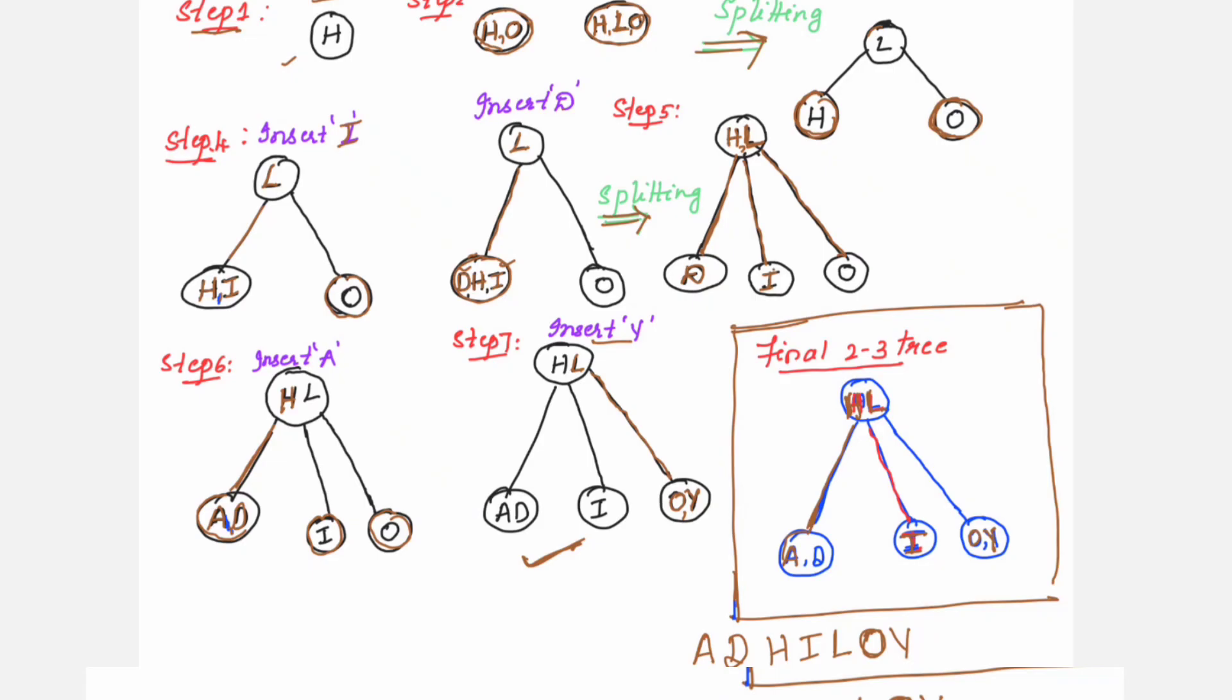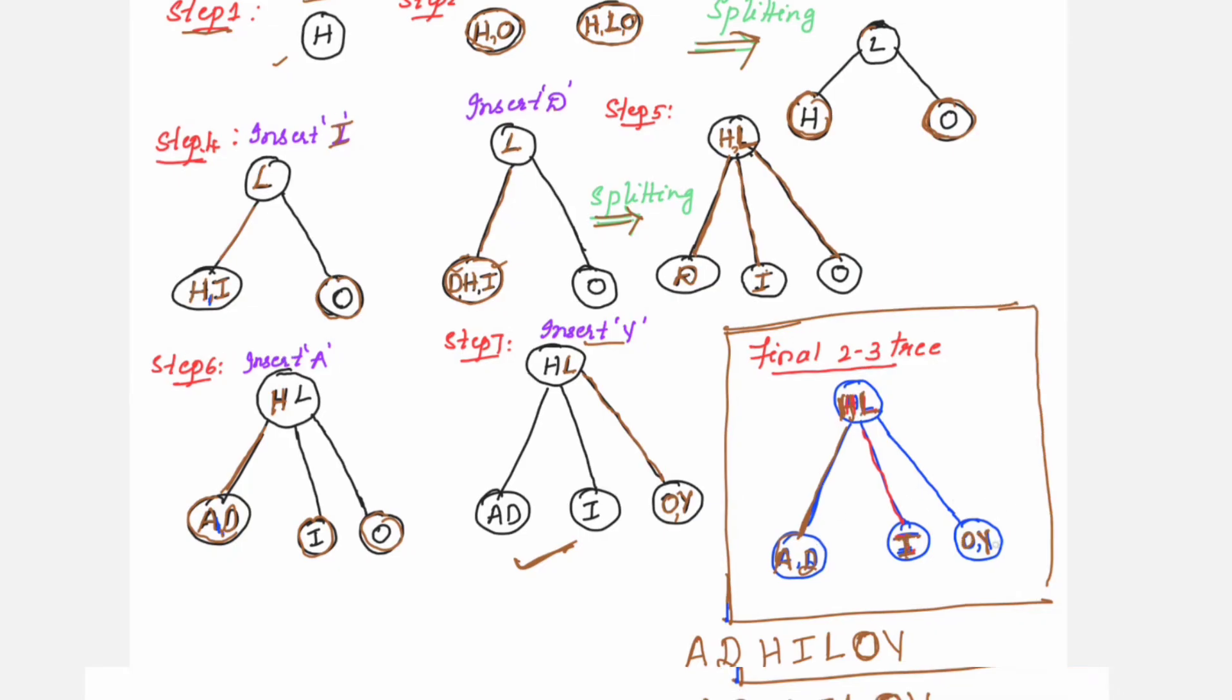Yes, all the letters which you have arranged in this 2-3 tree are as per the alphabetical order. As well, you have taken care that A and D are before the letter H, so it is appearing towards the left side. I lies in between H and L, it is appearing in the center. O and Y is after the letter L, so it is appearing towards the right side. That's it in this session. Hope you find it helpful. Please like, share and subscribe to my channel. Thank you. Bye-bye and take care.